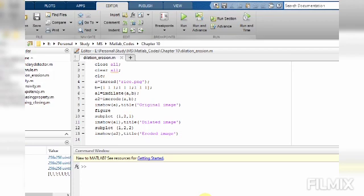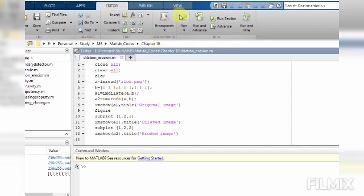MATLAB code for dilation and erosion. So first of all, we will read an image such as rice.png. Then we simply dilate the input image with a mask of 3x3 or 5x5 using the imdilate command. And for erosion, we will simply erode the input image with a mask of 3x3 or 5x5 using the imerode command.